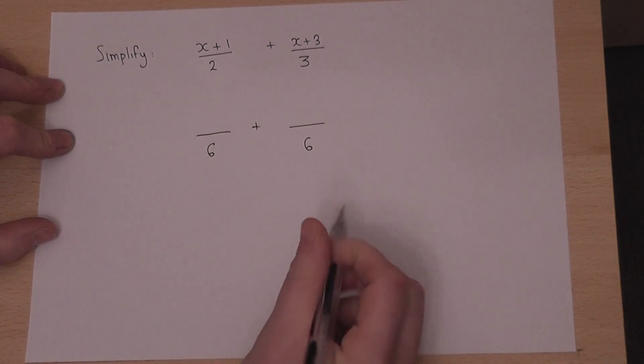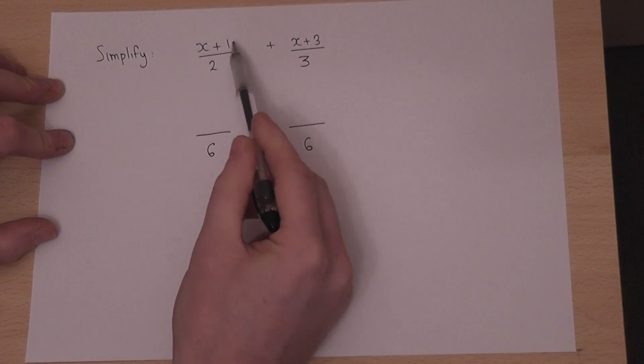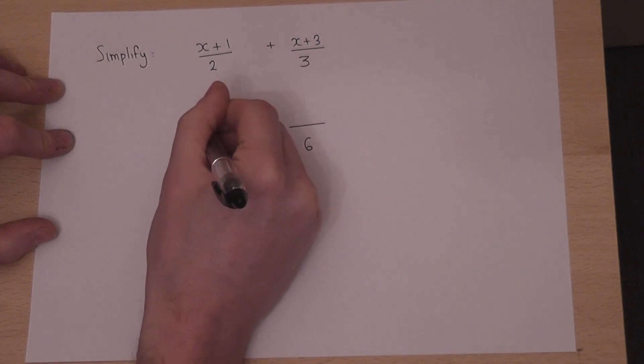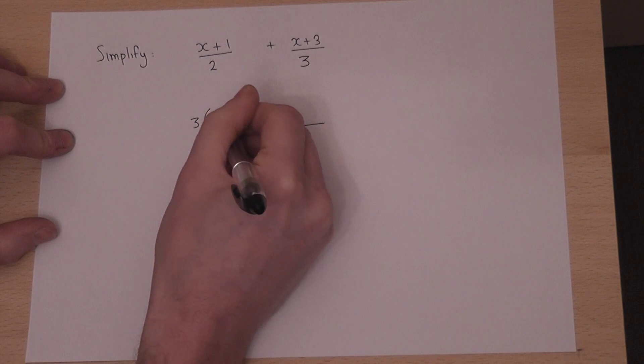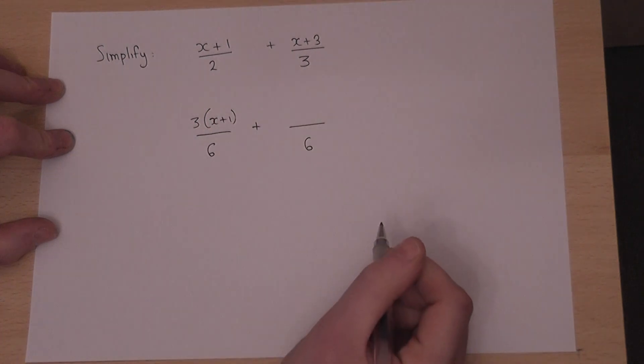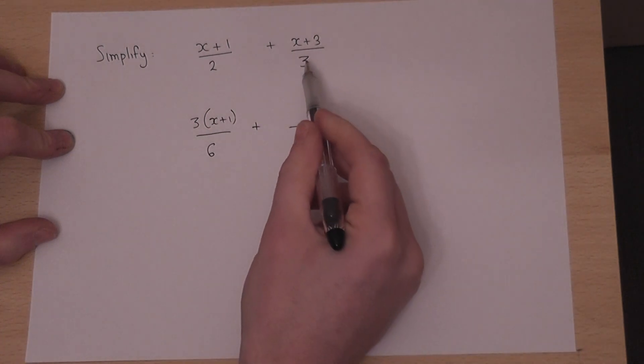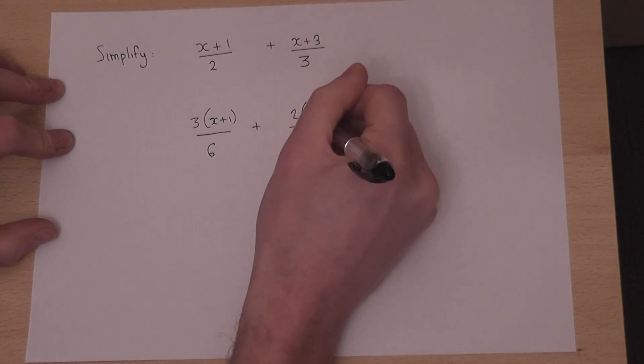So to achieve this, I must times the first fraction, top and bottom, by 3. So 3 lots of x plus 1, and the second fraction has been times by 2, so 2 lots of x plus 3.